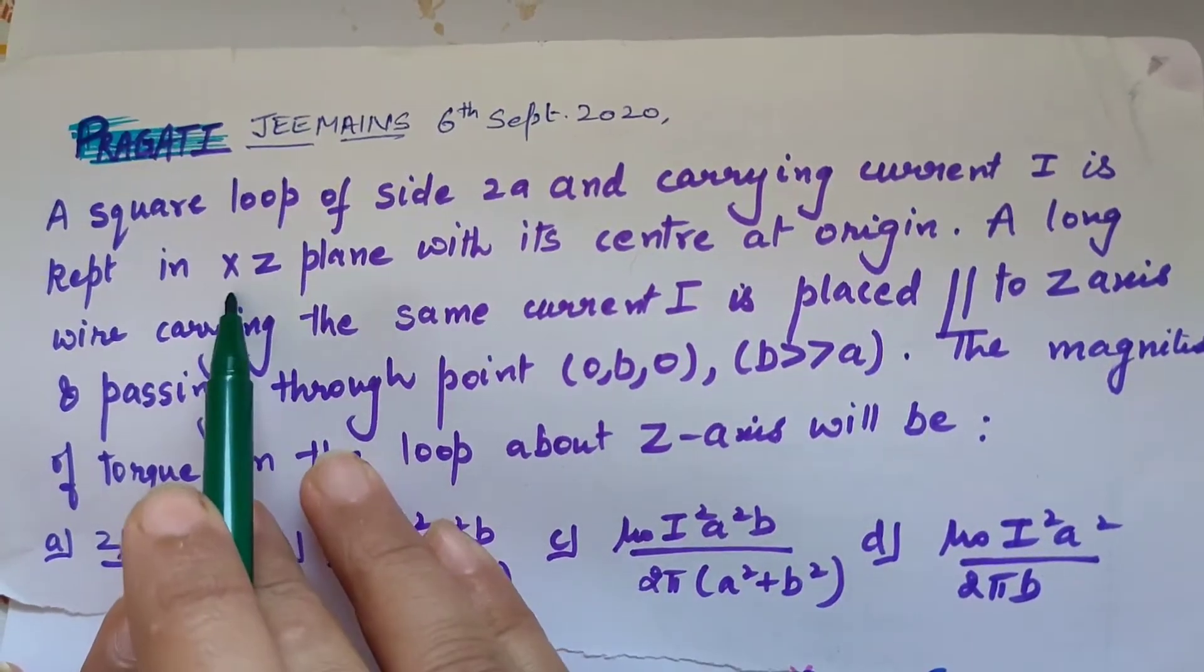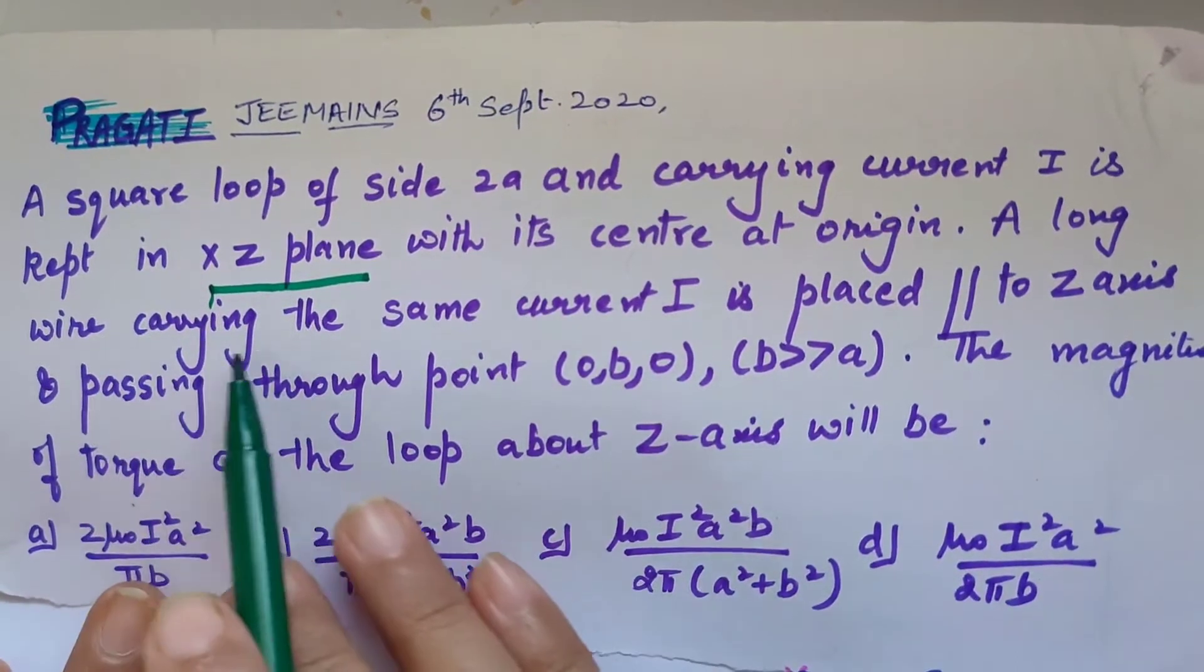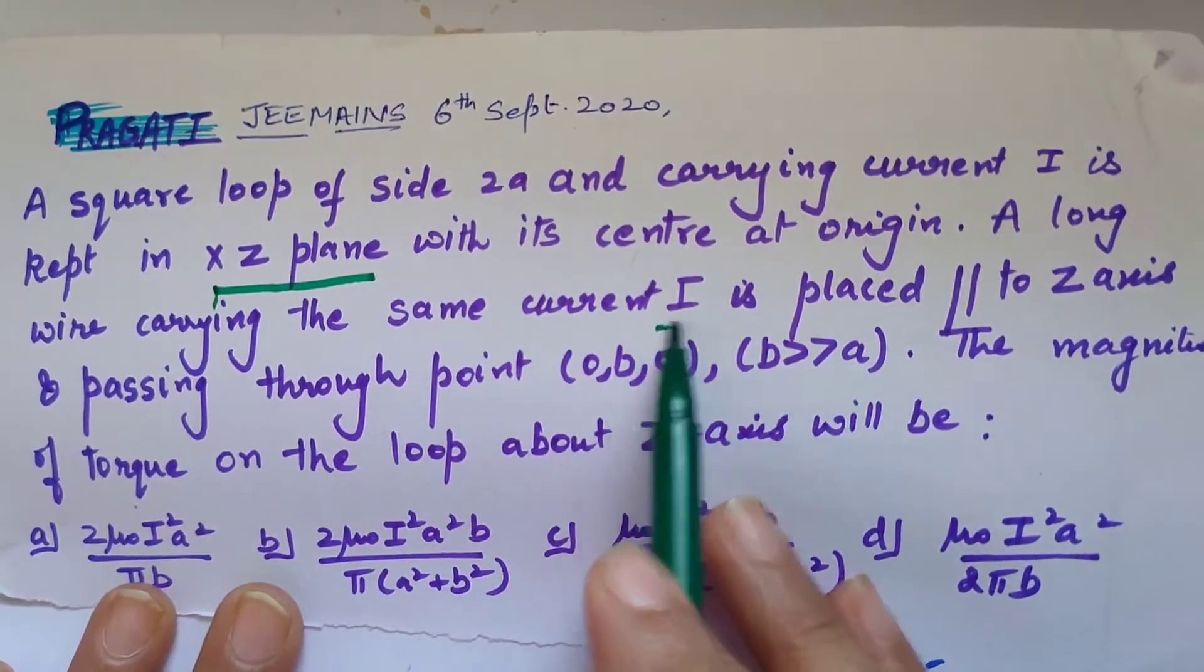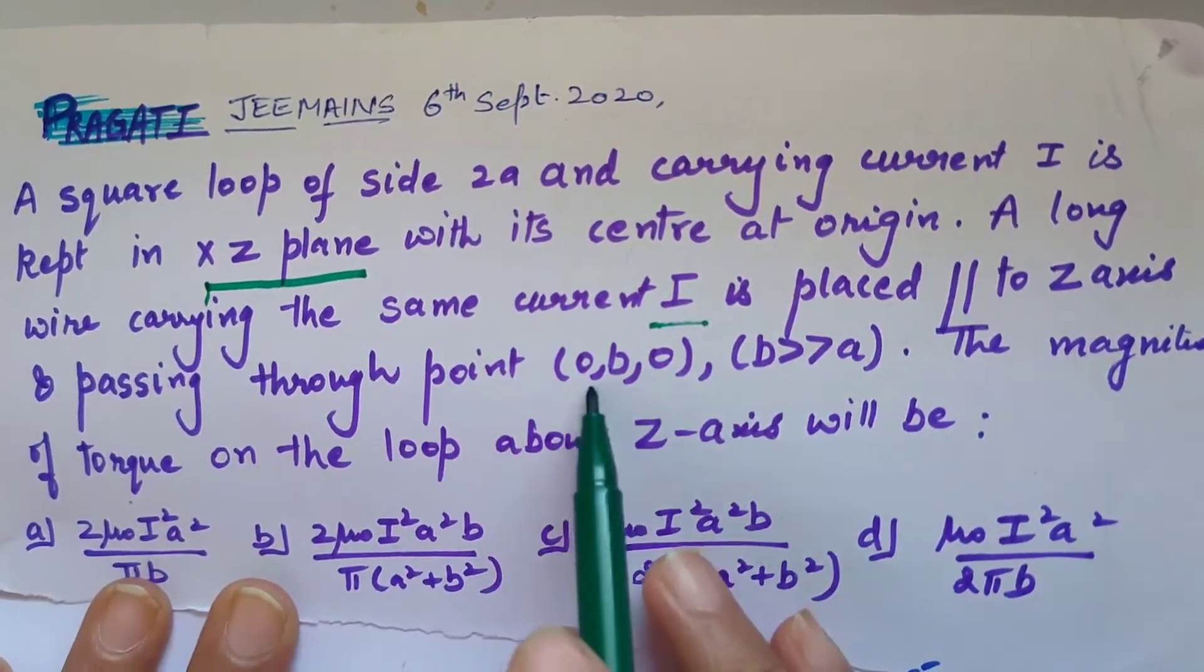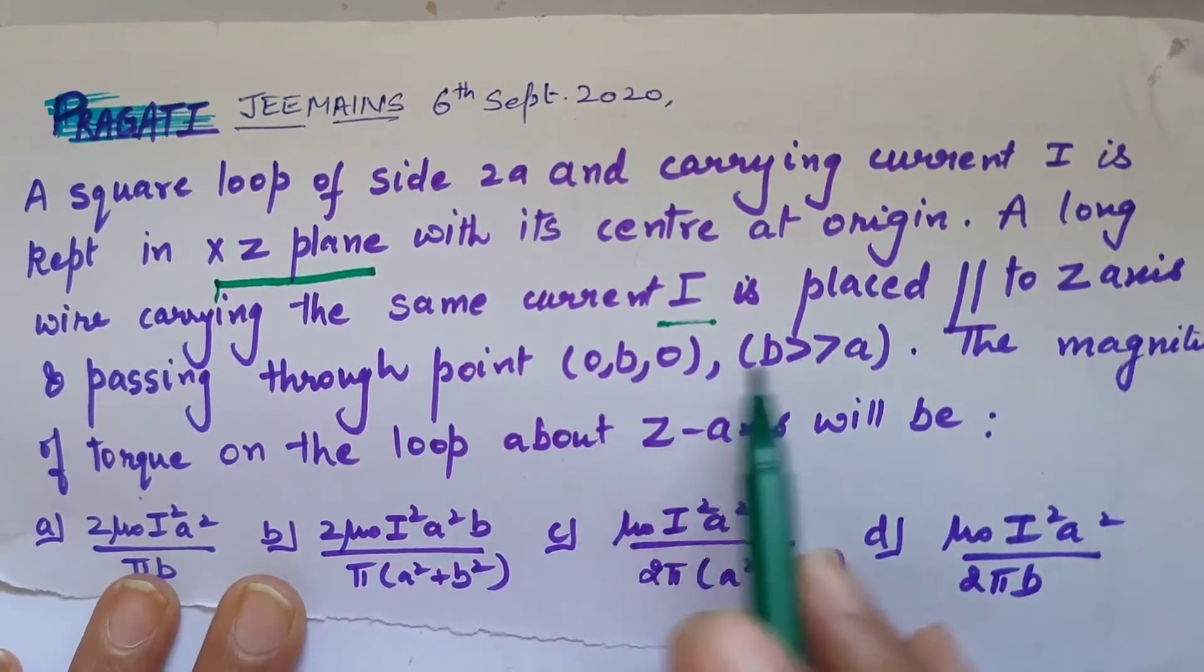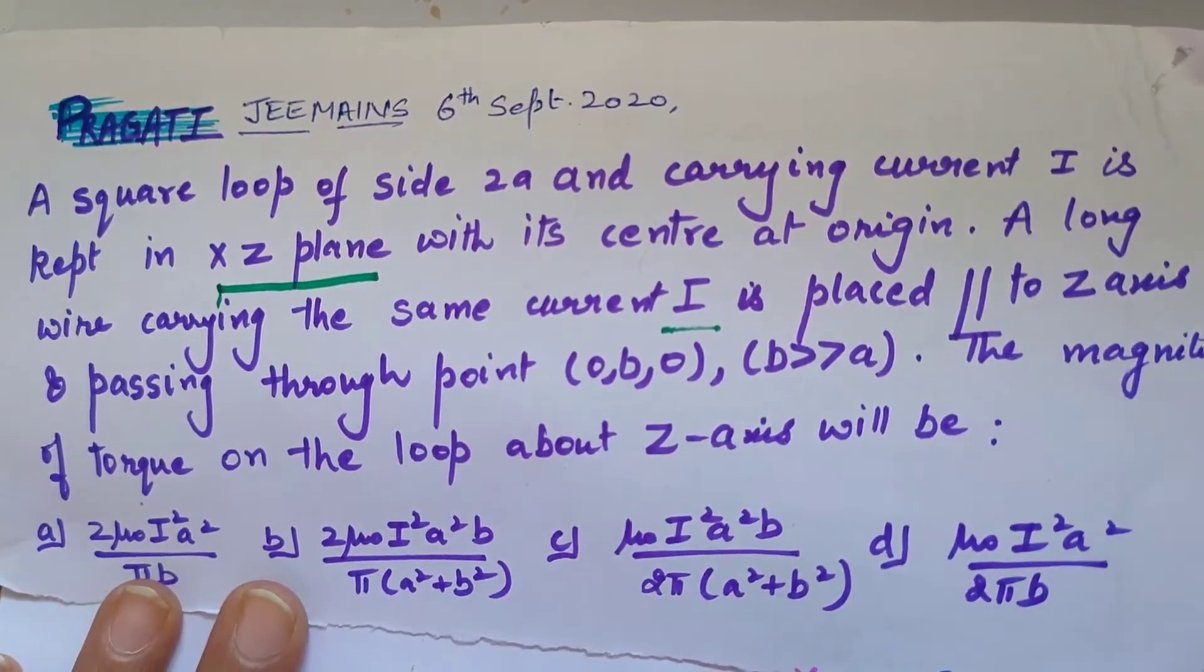The question is: a square loop of side 2a and carrying current I is kept in xz plane with its center at origin. A long wire carrying the same current I is placed parallel to z-axis and passing through (0, b, 0).